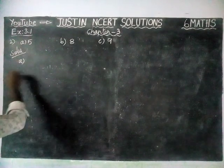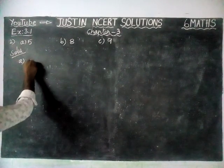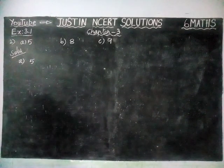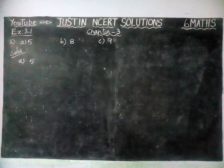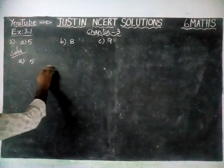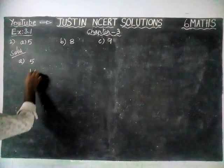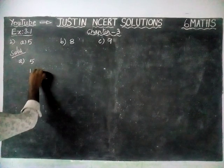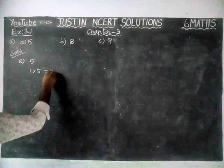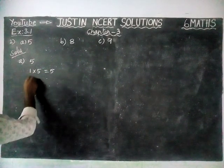Option A: 5. We are going to find the first 5 multiples of 5. So, 1 into 5 is 5.